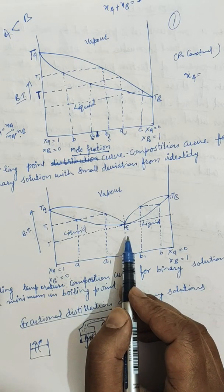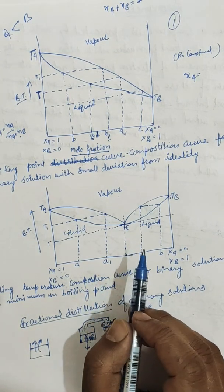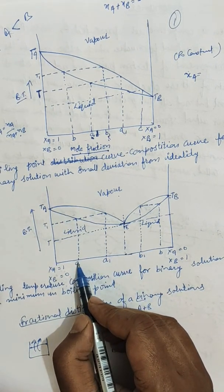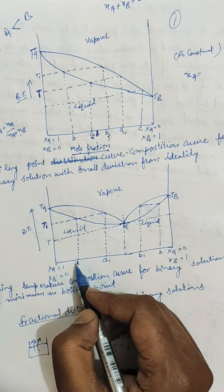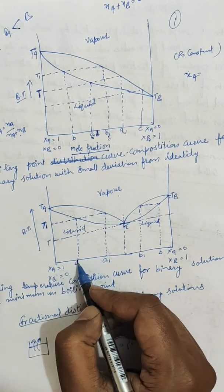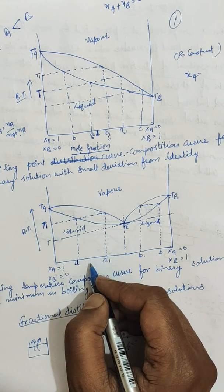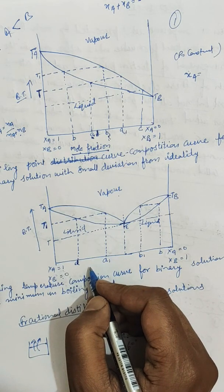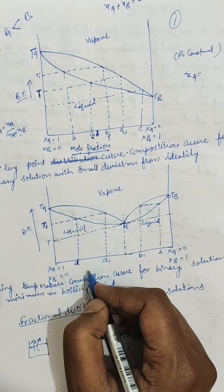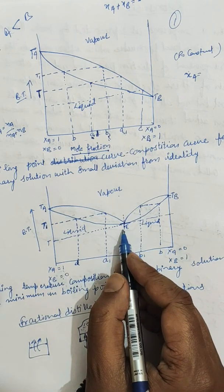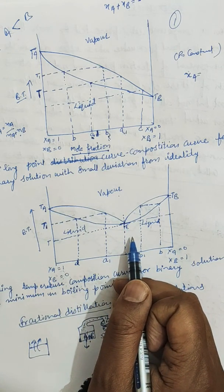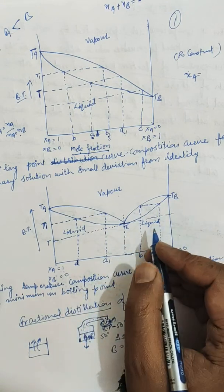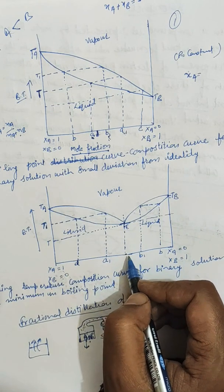When a solution at composition A is distilled, it starts boiling at temperature T1. The vapor will be richer in the constant boiling mixture, and the residue liquid will have more of component A. On further distillation, the vapor composition shifts more towards point E, and the residue liquid contains more of component A. Ultimately a mixture having the minimum boiling point T is obtained as the distillate having composition E, and the residue liquid will contain pure component A. However, it is not possible to obtain pure A as a distillate.